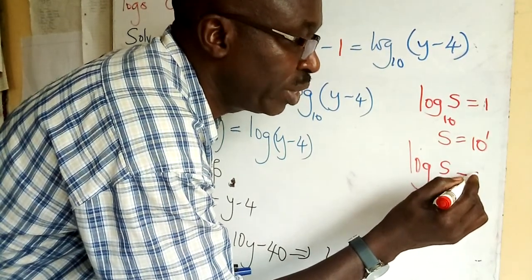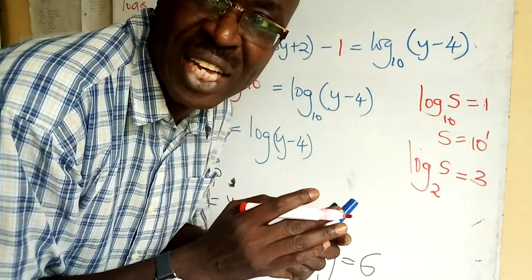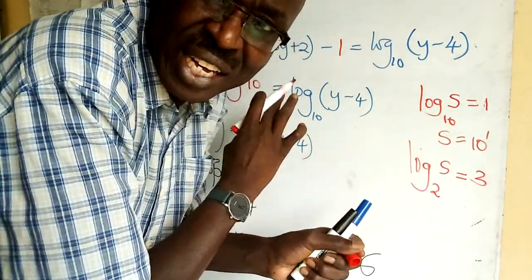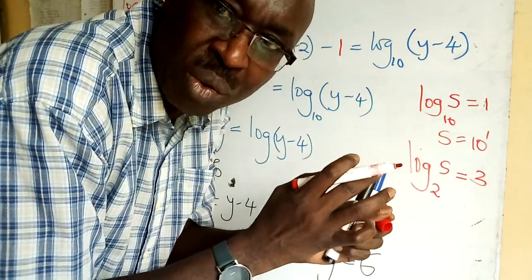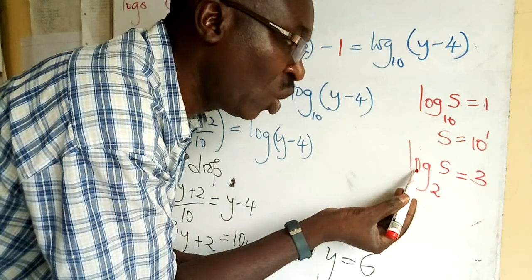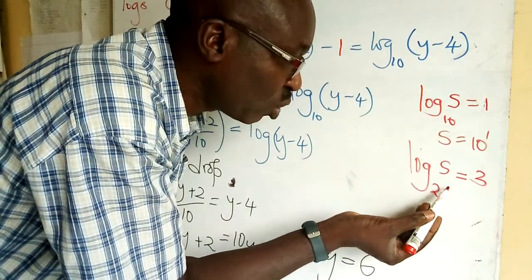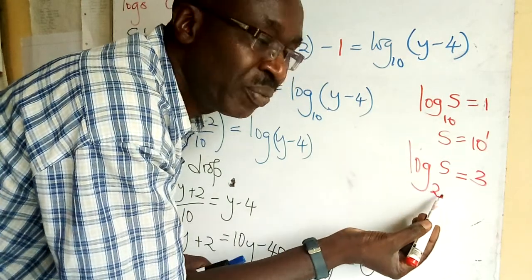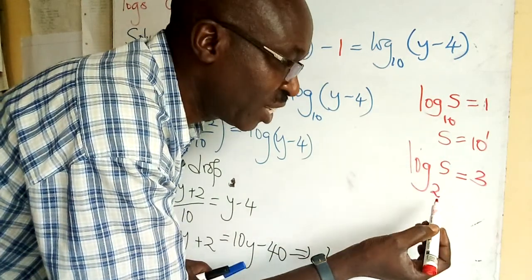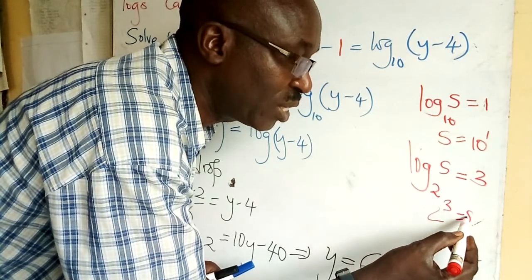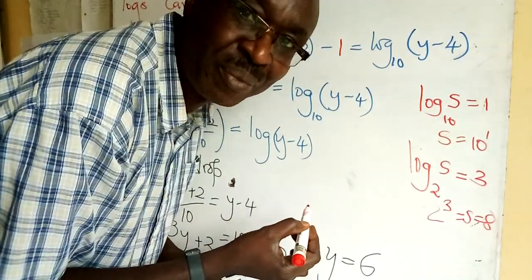To replace 3 with log s to base 2, I want to write in place of 3, this. How do you get s? You write 2 to power 3 equals s, which equals 8. Meaning that this 3 is removed.